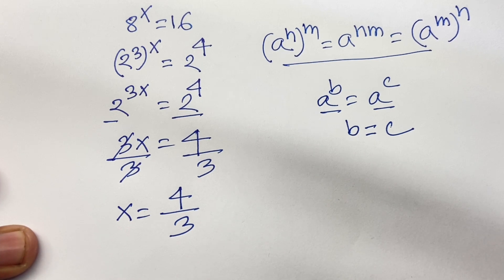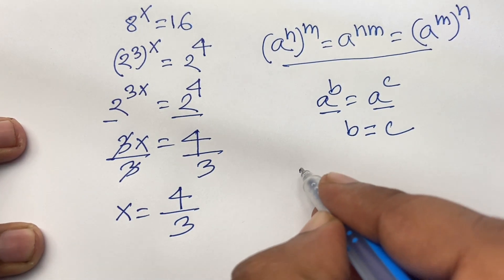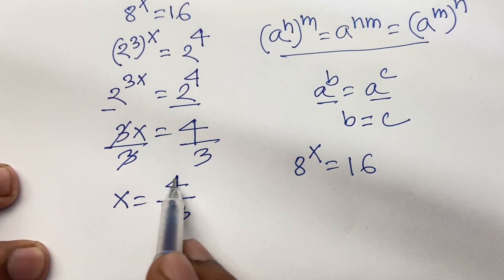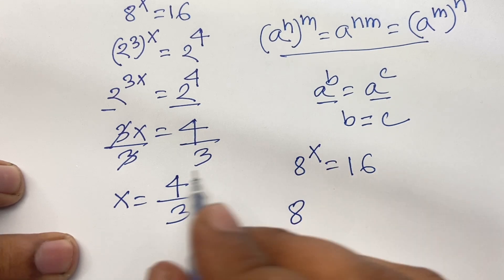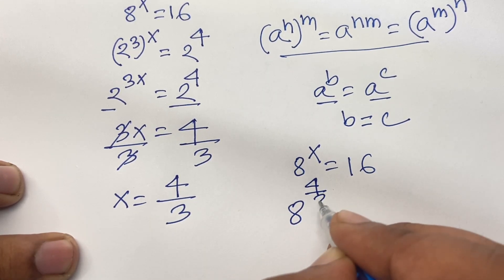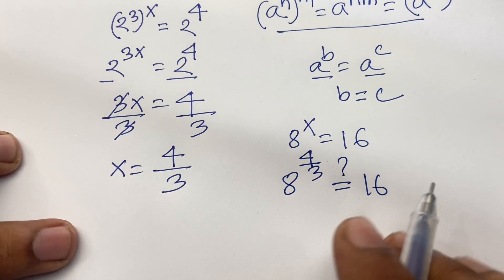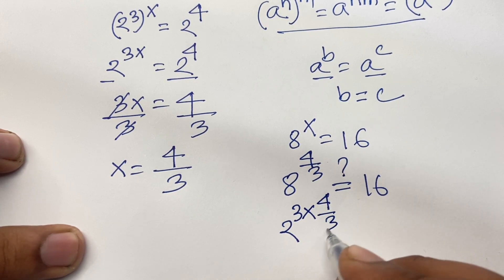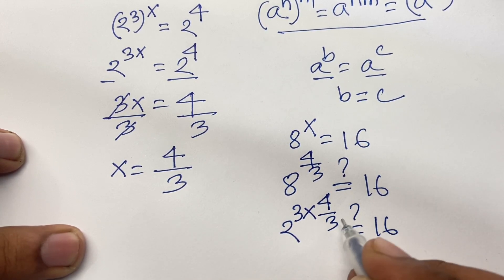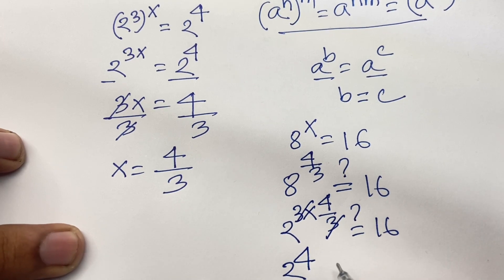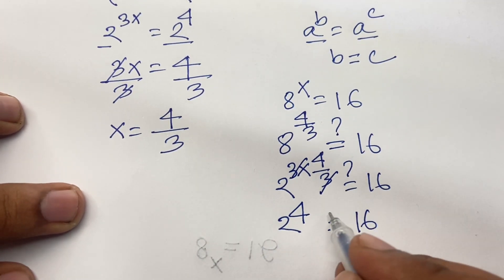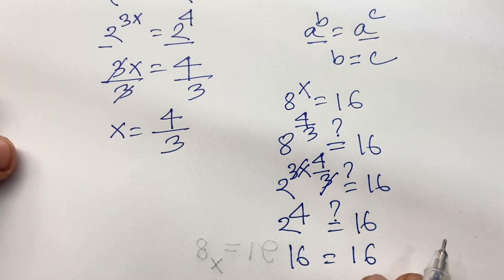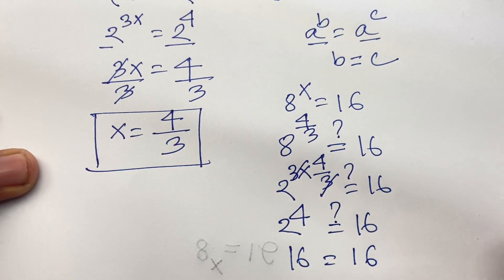Now if I verify: here is 8 power x equal to 16. We found x equal to 4 over 3, so here is 8 to the power 4 over 3 equal to 16. I can say 2 to the power 3 times 4 over 3 equal to 16. Here 3 and 3 cancel, so 2 to the power 4 equal to 16. We know that 2 to the power 4 equal to 16, so 16 equal to 16. I can say easily x equal to 4 over 3 is our right answer.